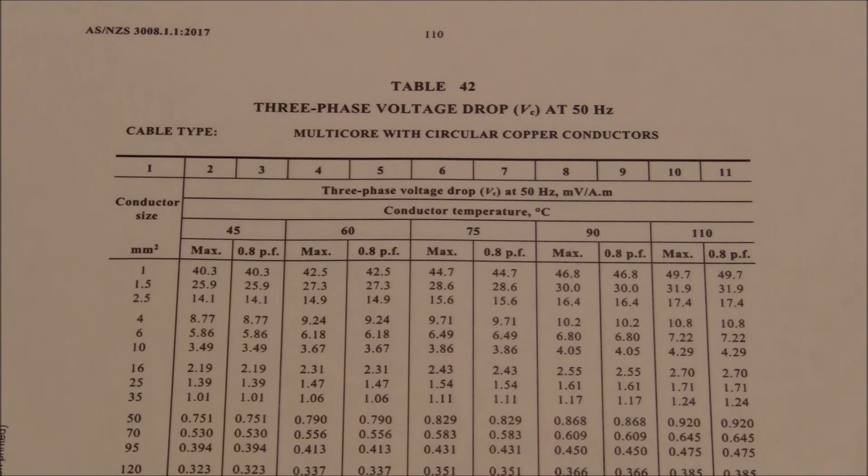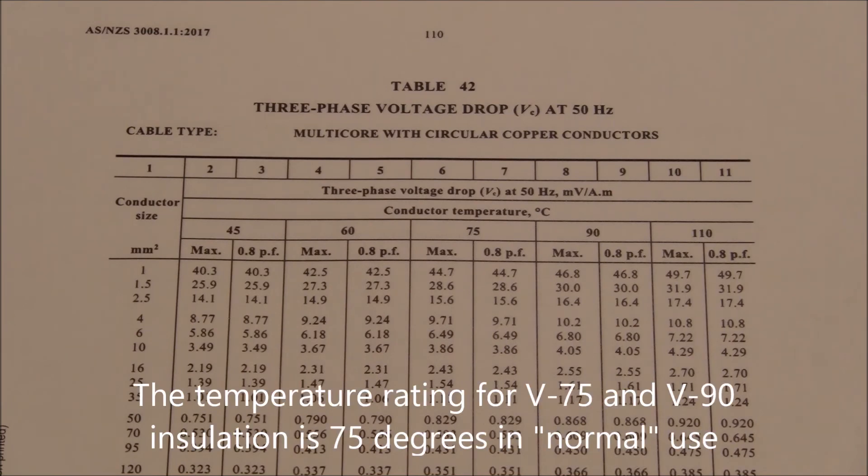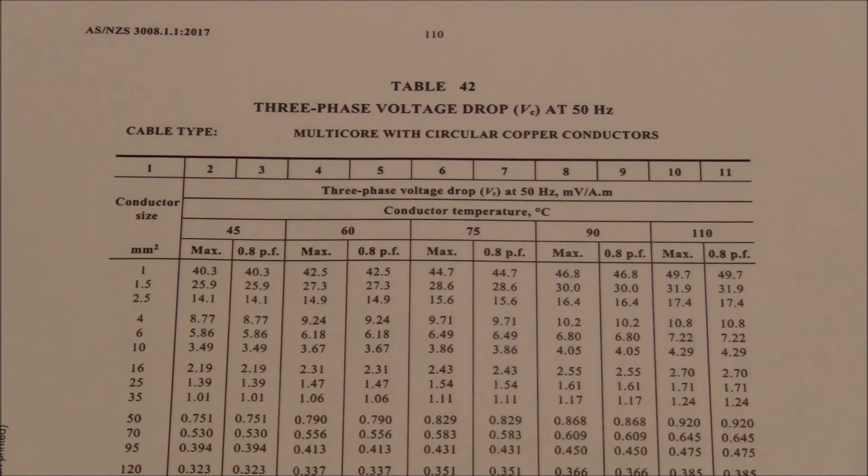Column 6 for 75 degrees, we find that 8.33 falls between 9.71 and 6.49.